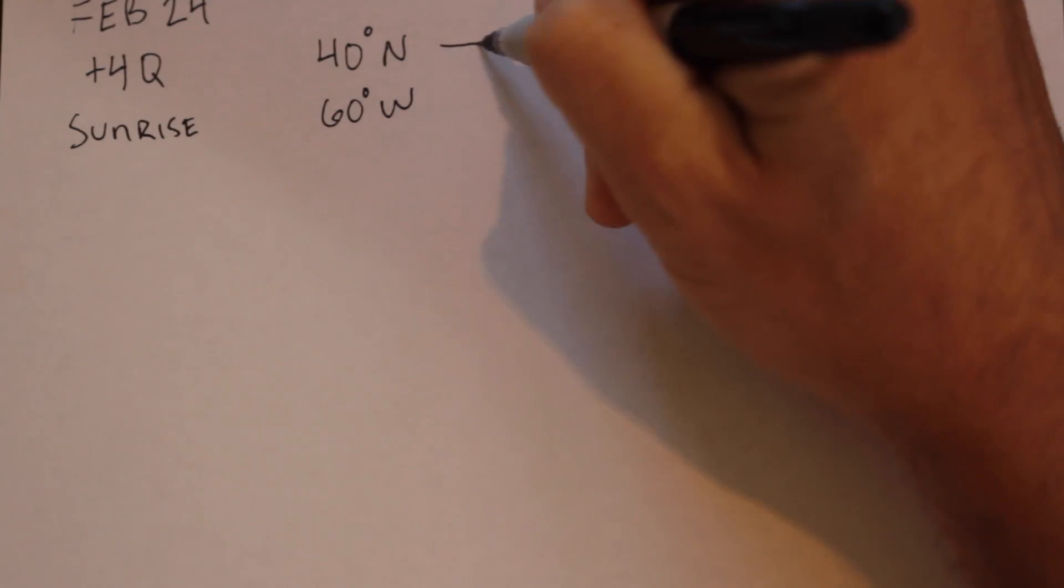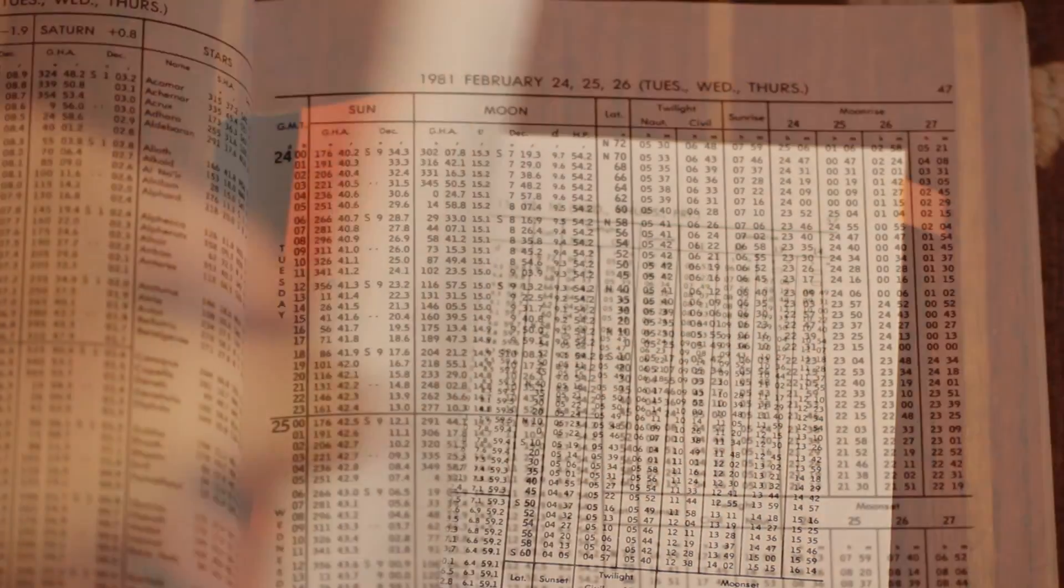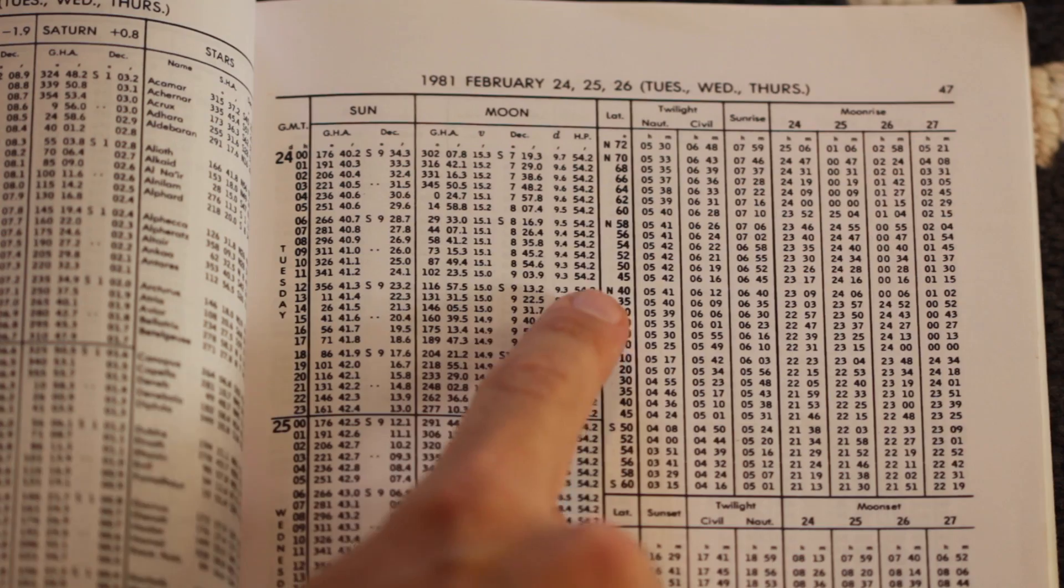Let's take a look at some examples. On February 24, 1981, we want to calculate sunrise for our position of 40 degrees north and 60 degrees west. We are observing time zone plus 4 Quebec. The first thing to do is find the time of sunrise for our latitude. Since we are at 40 degrees north, we can just pull the value right from the Nautical Almanac, 0640.